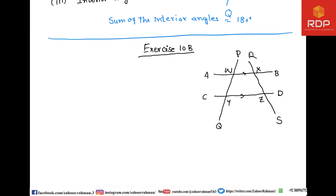In this question about the figure, AB is parallel to CD — that is very important. In mathematics, the symbol for parallel lines is two pipe symbols (∥). The question asks us to list two pairs of equal corresponding angles.